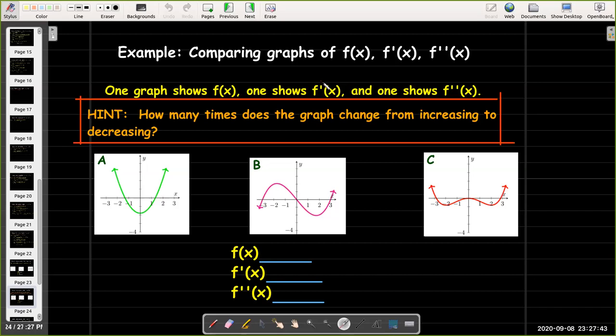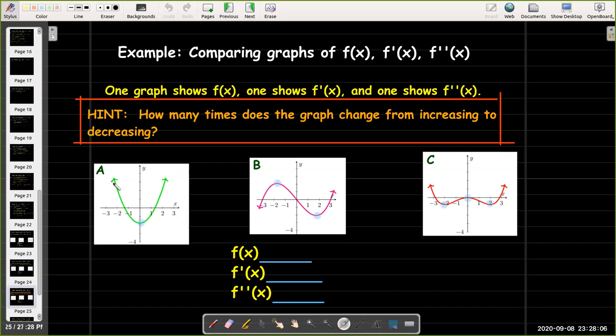Here's a hint. We're going to focus on how many times each graph changes from increasing to decreasing, which corresponds to the tangent line slope changing from positive to negative. In graph A, there's only one change from decreasing to increasing. In graph B, there are two changes: increasing to decreasing and back to increasing. In C, there are three changes.